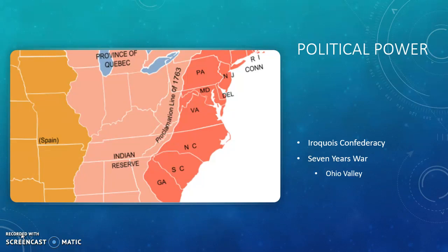So in looking at early colonial America, think about — as you review these chapters before the exam — how Indian people, in their actions, were able to be players in early America and were able to alter those initial ambitions of Europeans, which was to come in, take hold of the land, maintain political power, and in many cases propagate their own religious ideas. What did Indian people do to prevent that, to alter that, to shape it, and to put their own stamp on early America?